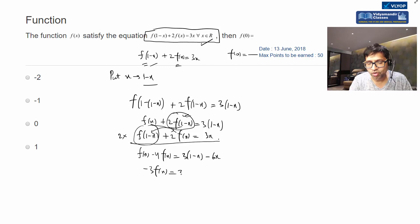Take 3 common. We have 1 - x - 2x. Cancel 3 with 3. So f(x) comes out to be 3x - 1. F(x) on the right-hand side, so f(0) is -1.